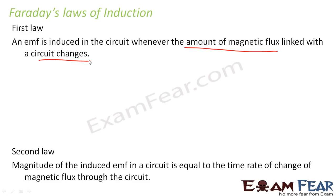From the past three experiments, what he found was that because of magnetic flux there is some current flowing through the circuit, which means there is some EMF being induced. He also observed that it was not because of the flux itself but because of the change in flux, because the third experiment clearly showed that only during the change was there an induced current. So he said that whenever the amount of magnetic flux linked with the circuit changes, only then is an EMF induced, and this induced EMF will last only as long as the change in flux continues.